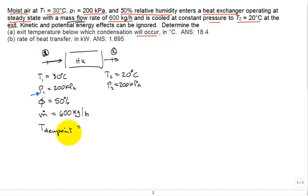So how do I calculate the dew point temperature? Well, the way you calculate it is it's the saturation temperature for the partial pressure of the water vapor in the moist air mixture. How do I calculate this partial pressure? Well, you're given the relative humidity.